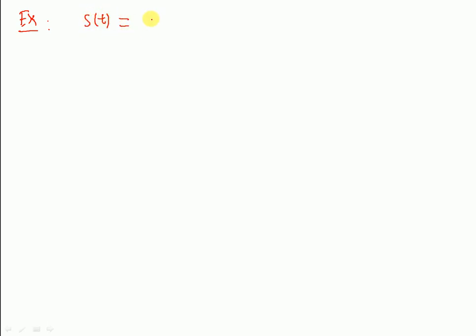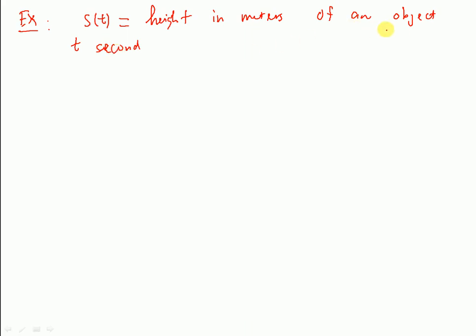Let's go over one example to see if it makes sense. I have a given function s of t, and this function represents the height in meters of an object after t seconds. So t here represents the seconds after the object is being thrown in the air.